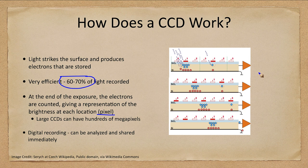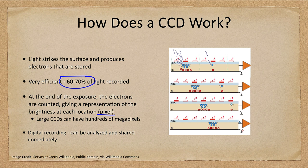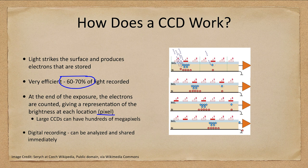You transfer the electrons and count them as they come out, and that tells you the brightness. You do that for millions of pixels — megapixel CCDs or even billions of pixels. It is a detailed process but one that you're familiar with every day. And of course it is a digital recording, so it can be analyzed and shared immediately. You can send it to a colleague across the country or across the world, get their opinion, and know in real time whether you need to continue studying that object, take a different exposure, or move on to the next object.